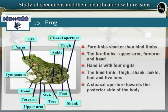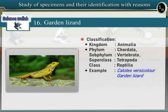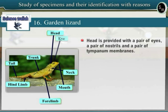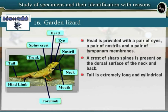Specimen 16: Garden Lizard (Calotes versicolor). Observe the specimen of Garden Lizard. Garden Lizard belongs to phylum Chordata, subphylum Vertebrata, superclass Tetrapoda and class Reptilia. Garden Lizard has weak limbs and shows creeping locomotion. The body is covered with scales and hence it is included under class Reptilia. The body is divisible into head, trunk and tail. Skin is covered by exoskeleton of horny scales. The head is provided with a pair of eyes, a pair of nostrils and a pair of tympanum membranes. A crest of sharp spines is present on the dorsal surface of the neck and back. The tail is extremely long and cylindrical. It is an insectivorous animal and can change its color for camouflage.